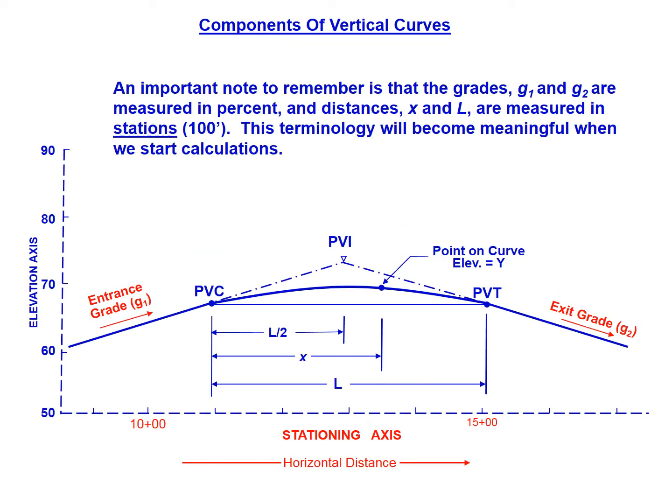One of the most common mistakes with vertical curve problems when applying the parabolic equation is not using the correct units. When we're dealing with the grades, G1 and G2, those are always in percent. And the sign is very important. If G1 in this case was positive 4%, any equation that asks for G1 in our parabolic formula, we need to put in positive 4. For the exit grade, in this case maybe it's negative 3%, we'd want to make sure we always put in G2 as negative 3.